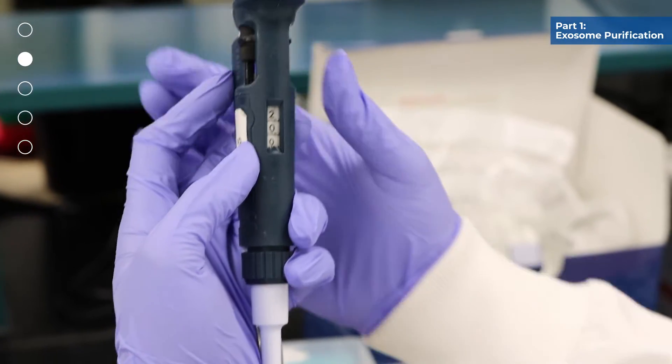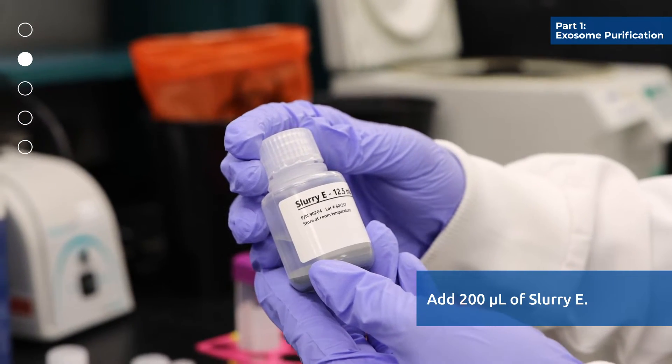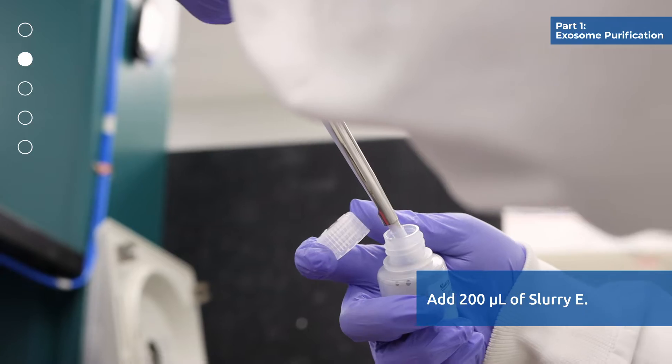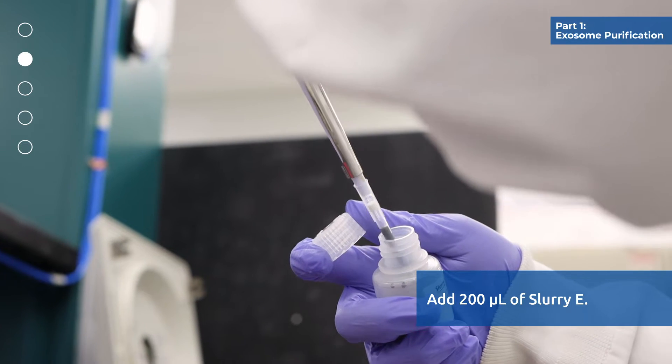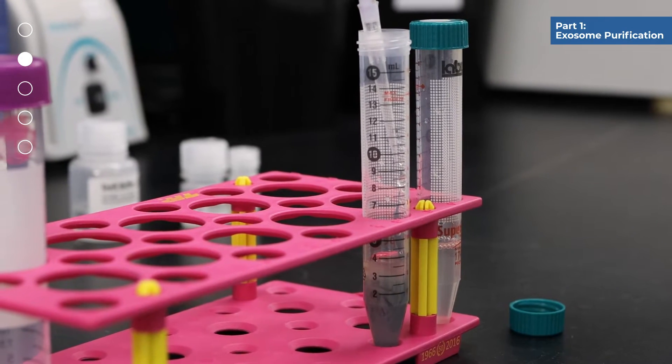To the mixture from step 1, add 200 microliters of slurry E. Note that you should mix slurry E well prior to use. For optimal performance, ensure that resin is completely re-suspended.